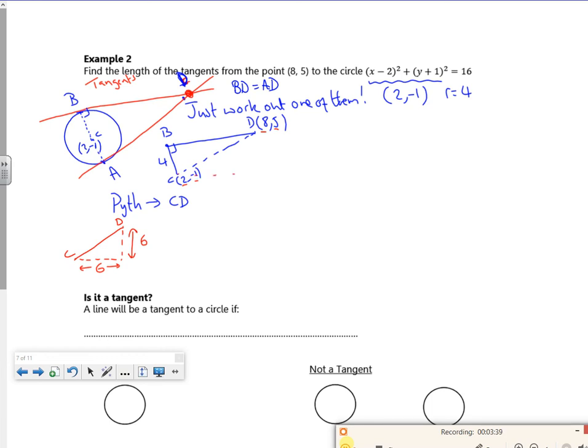So the length of C to D. So the length of C to D will be the square root of 6 squared plus 6 squared. So that's going to be 6 root 2, I reckon. So that's this length now. So I've got this middle length here, and that's 6 root 2.